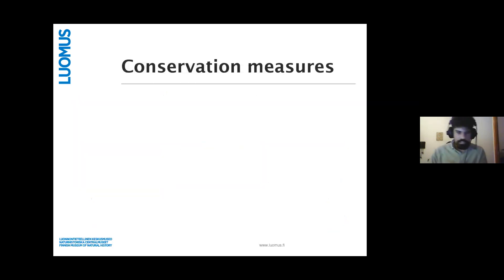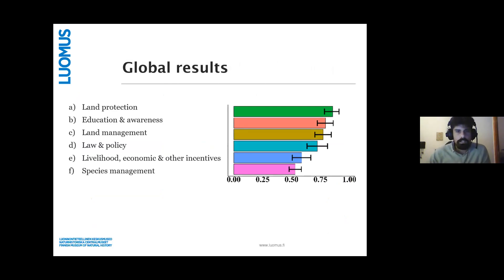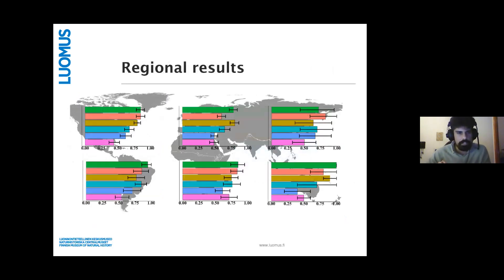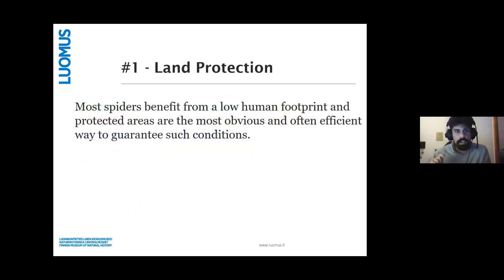Moving to conservation measures — the most relevant conservation measures according to our experts were land protection, education and awareness, and land management. Regionally, there is a big emphasis being put on law and policy in the Neotropics.